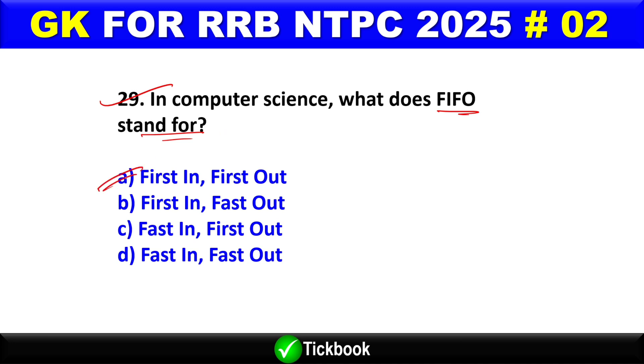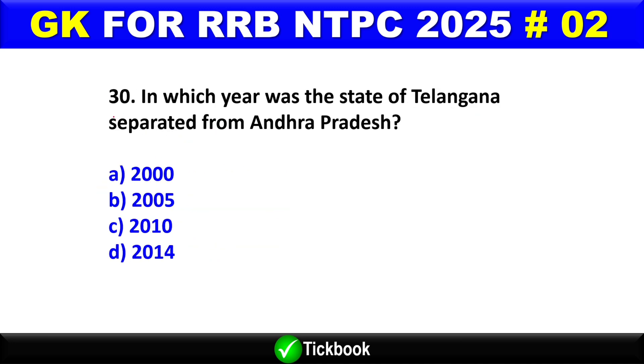Question number 29: In computer science, what does FIFO stand for? Option A is the right answer — First In, First Out. Question number 30: In which year was the state of Telangana separated from Andhra Pradesh? Option D is the right answer — 2014.